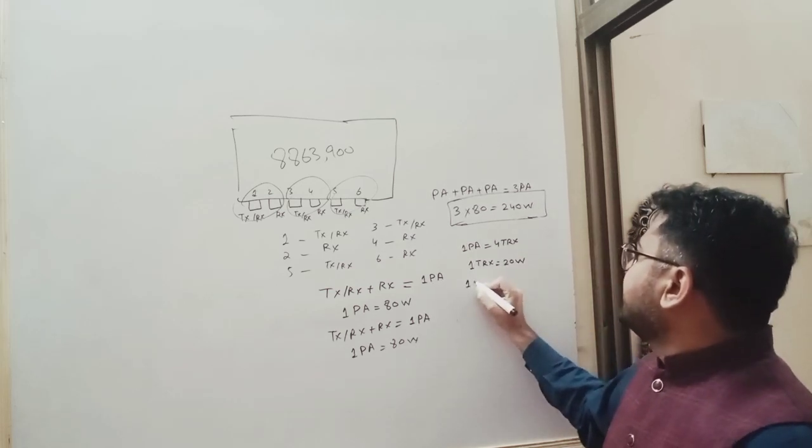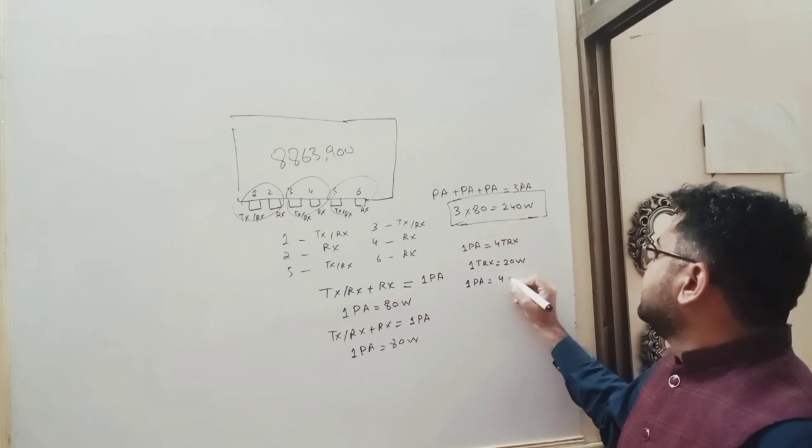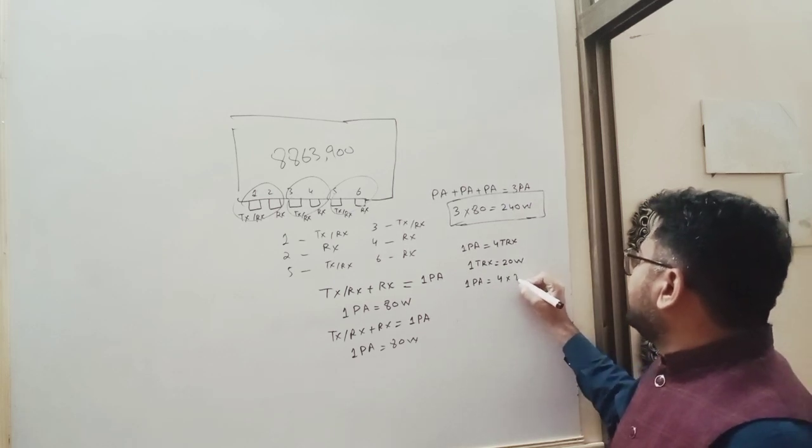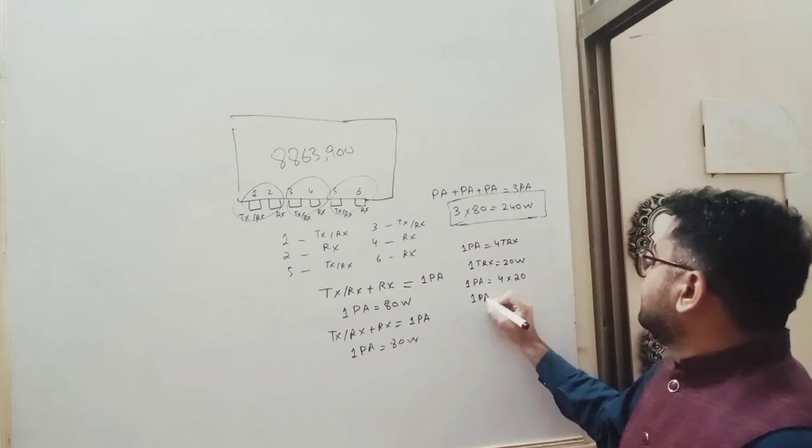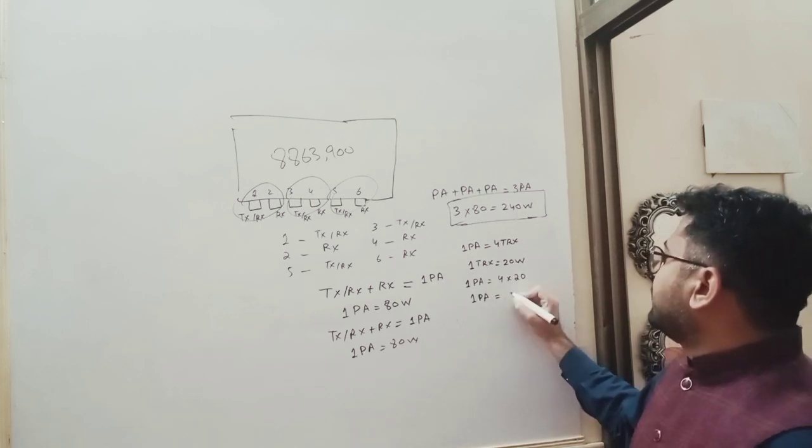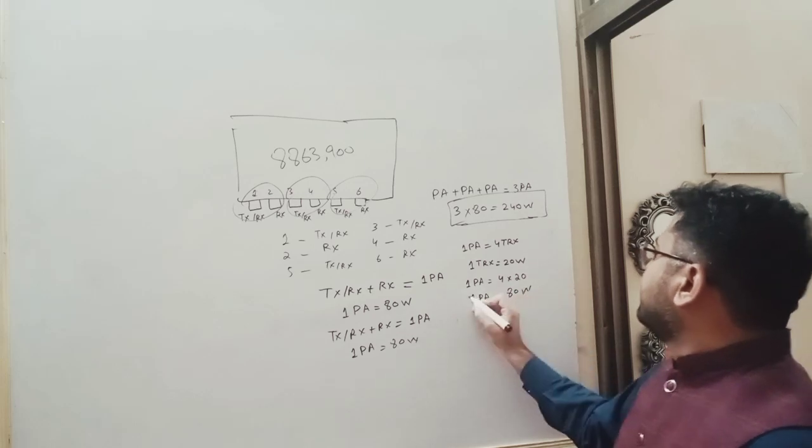So 1 PA having 4 TRX, multiply with 20, and 1 PA is equal to 80 Watt.